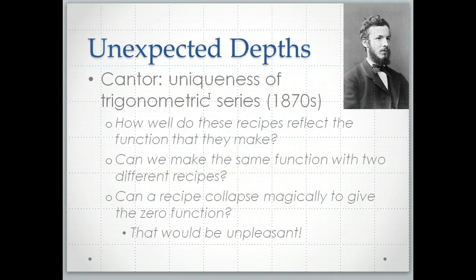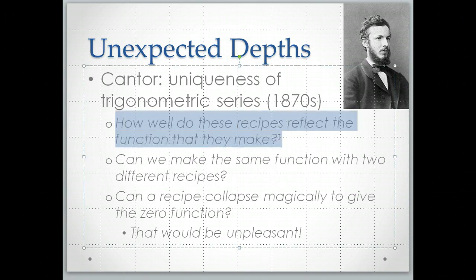So this is where Georg Cantor comes into the picture. In the 1870s, Cantor was 24 years old, and he's given a problem, a suggestion to work on, to sort of complete his training as a mathematician. And that's the problem of uniqueness of trigonometric series. And I do really want to not talk about the details here, and I apologize for people who want a more technical presentation, but this is not it. Basically how well, we've got these recipes that make functions of making them out of certain amounts of certain kinds of wiggles, certain frequencies. How well do the recipes reflect the function that they make?